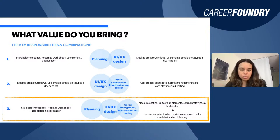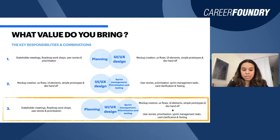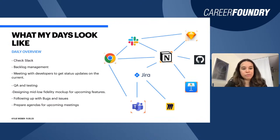The third combination — planning, UX, and sprint management with testing — is what I'm most familiar with as a freelancer. Sometimes a product doesn't need heavy UI work because it's pulling elements from already-built libraries, so energy shifts more to sprint management and testing. It really depends on the project, company, organization, and culture. As a freelancer, this holistic combination is what I work with most at the moment.